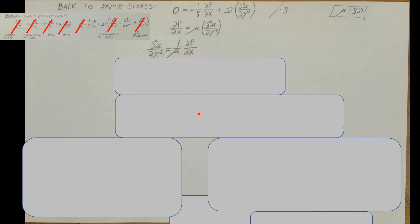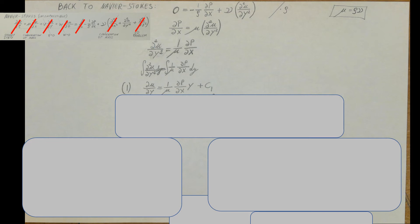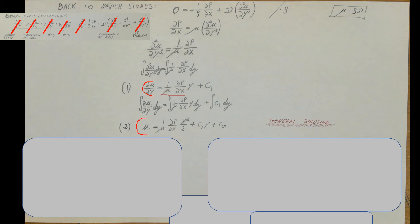What we need next is the velocity profile — that is U by itself. To get there, we need to integrate this equation twice with respect to y. The first integral gives us the first derivative of U with respect to y on the left, and on the right: the constant times y plus C1. The second integral gives us our coveted U equals the constant times y-squared plus C1 times y plus C2. This is the general solution of our differential equation.